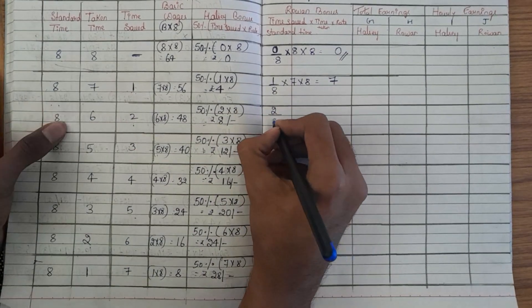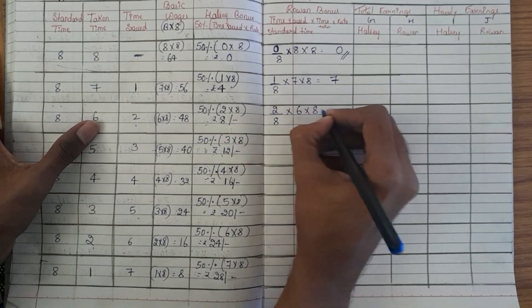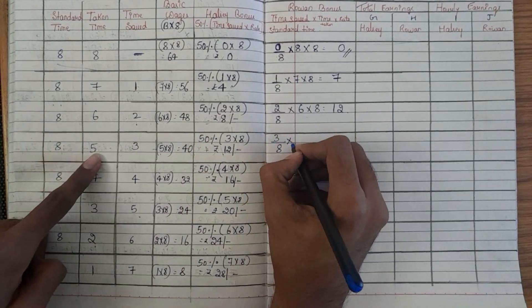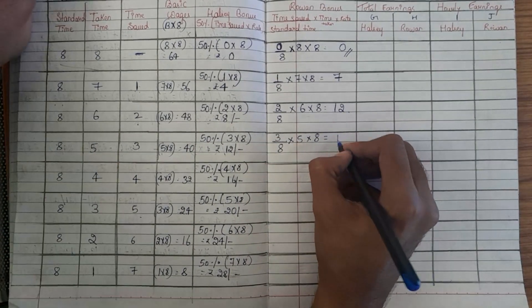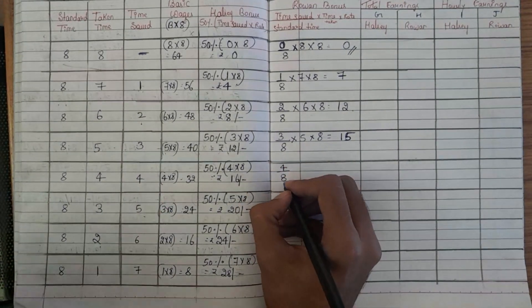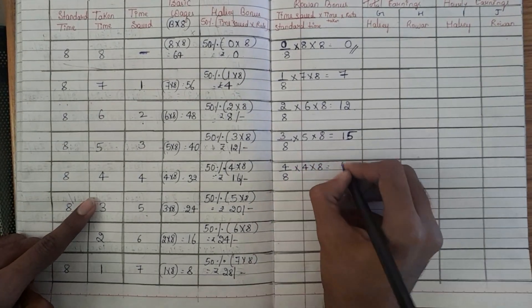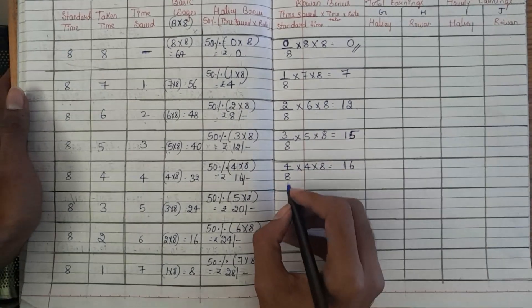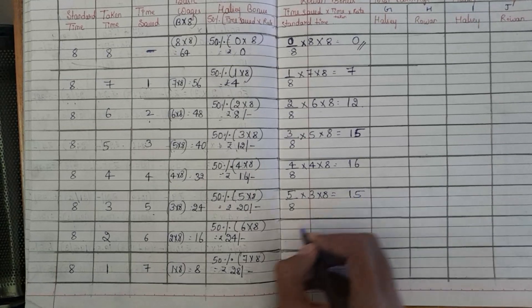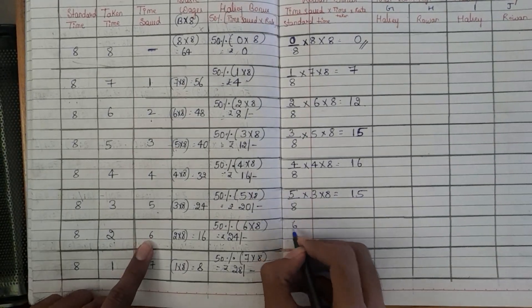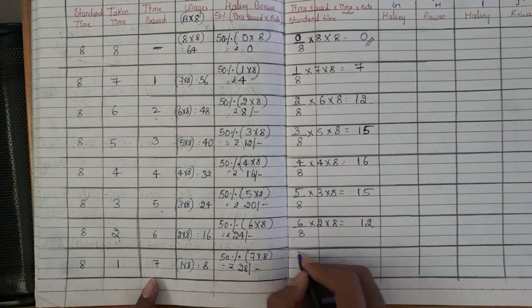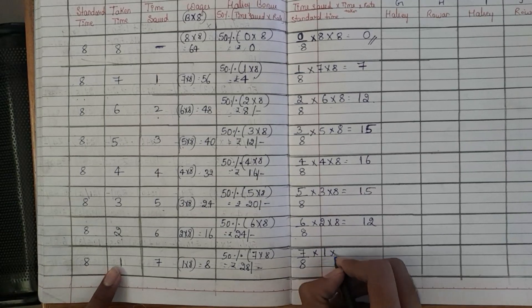Continuing the Rowan bonus calculations for each case: time saved 1 ÷ 8 × 7 × 8 = Rs.7; time saved 2 ÷ 8 × 6 × 8 = Rs.12; time saved 3 ÷ 8 × 5 × 8 = Rs.15; time saved 4 ÷ 8 × 4 × 8 = Rs.16; time saved 5 ÷ 8 × 3 × 8 = Rs.15; time saved 6 ÷ 8 × 2 × 8 = Rs.12; and time saved 7 ÷ 8 × 1 × 8 = Rs.7.